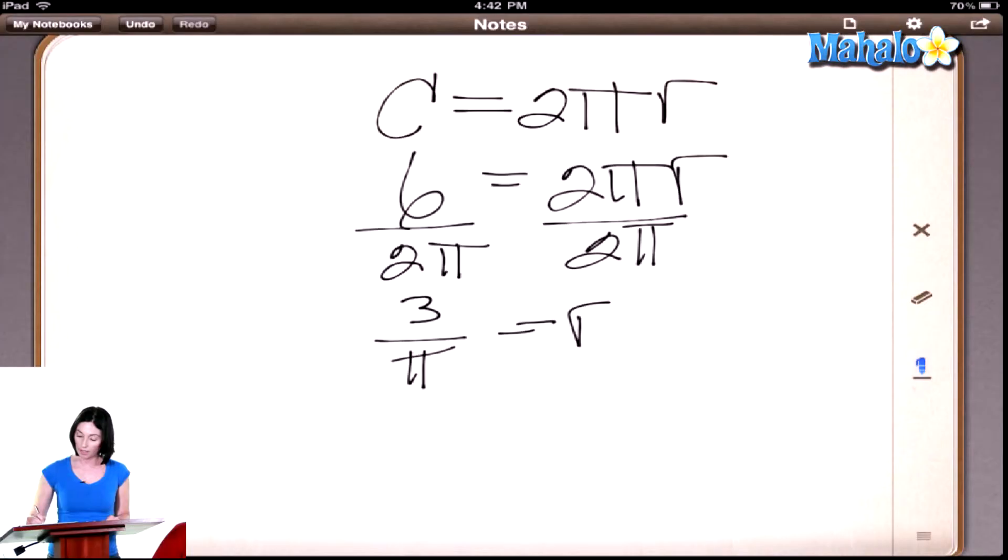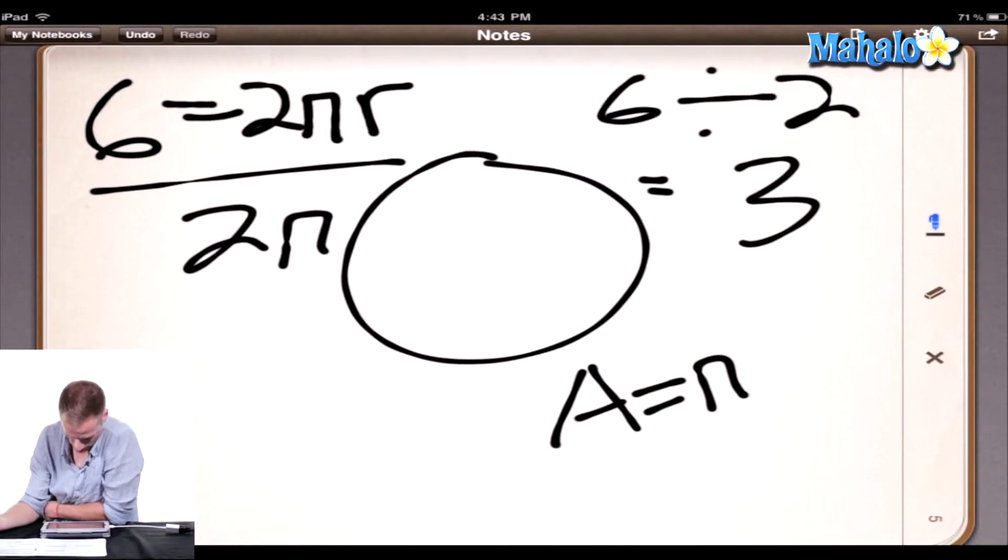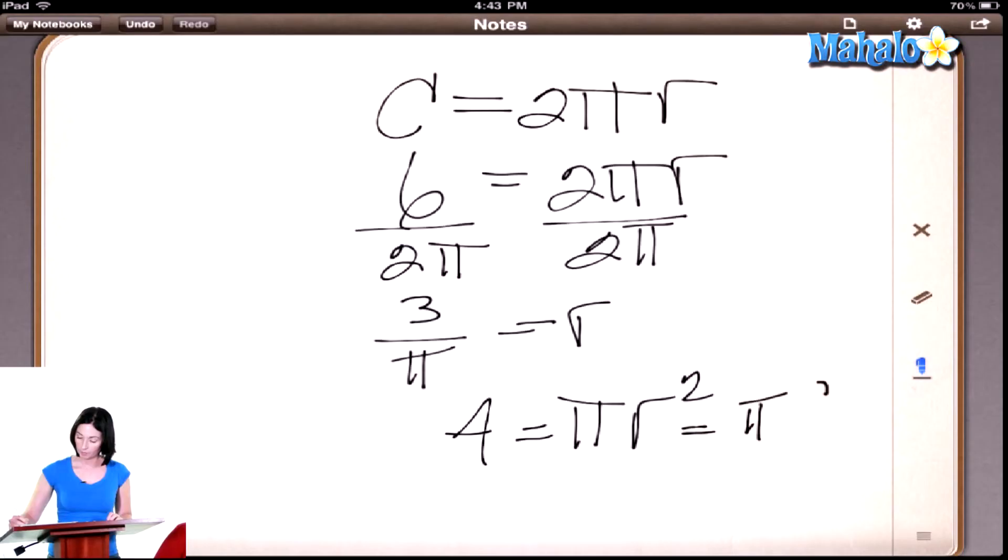So now the area is equal to pi r squared. So what does that give us? What happens when you square three over pi? What do you get? Just square the top and square the bottom. Nine over pi? Nine over pi squared, right. One of the pi's cancel out, so we get the area equal to nine over pi.